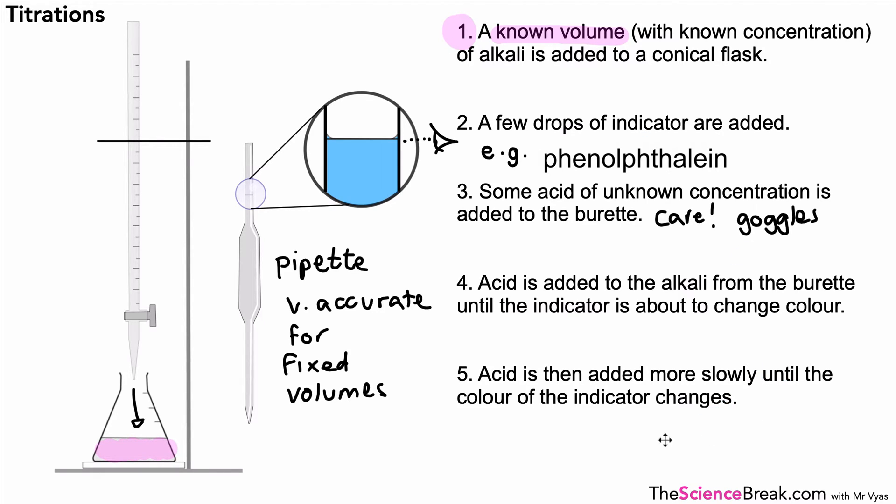We slowly add acid until the color changes and then we have a rough idea of when or at what volume the color is going to change. We would then repeat steps one to five, but this time we would add the acid very carefully drop wise near the change point. We would add it drop by drop and swirl the flask.